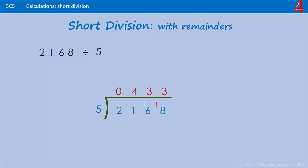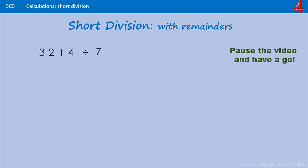So we get three lots of five in there, but the difference between 15 and 18 is three, so we have a remainder of three. 2168 divided by five is 433 remainder three. And this is one for you to try. Pause the video and have a go.